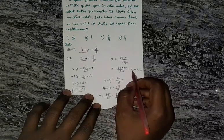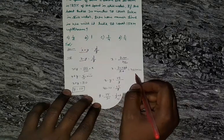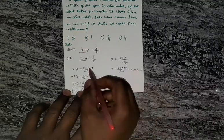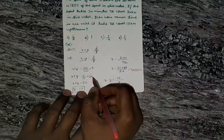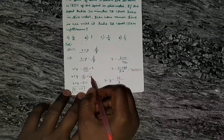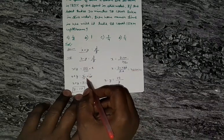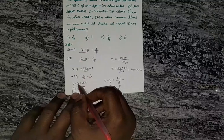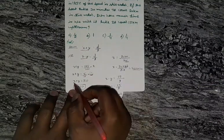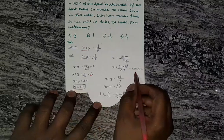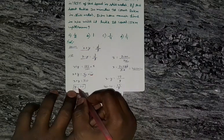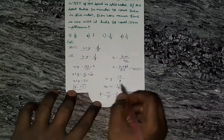That gives us x equals 40 kilometers per hour. Substituting: x plus y equals 5 by 4 of 40, which equals 50. So x plus y equals 50. Since x equals 40, the speed of the stream y equals 10.